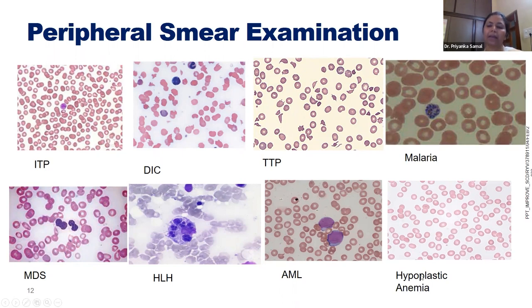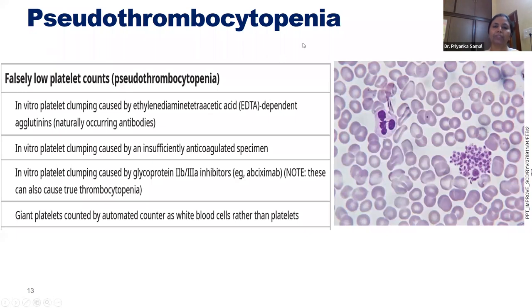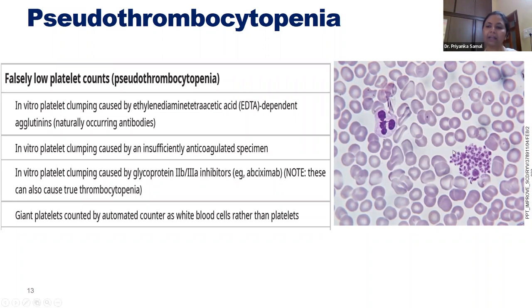In aplastic anemia with bone marrow failure, the marrow cannot produce cells across all lineages — RBC content is low, platelets are low, and WBCs are also low. Pseudothrombocytopenia: in EDTA samples, naturally occurring antibodies can cause platelet agglutination and clumping in the test tube. These clumps are not read by the machine, causing falsely low platelet counts. On smear, you can see platelet clumps, suggesting the true count may be more than one lakh.